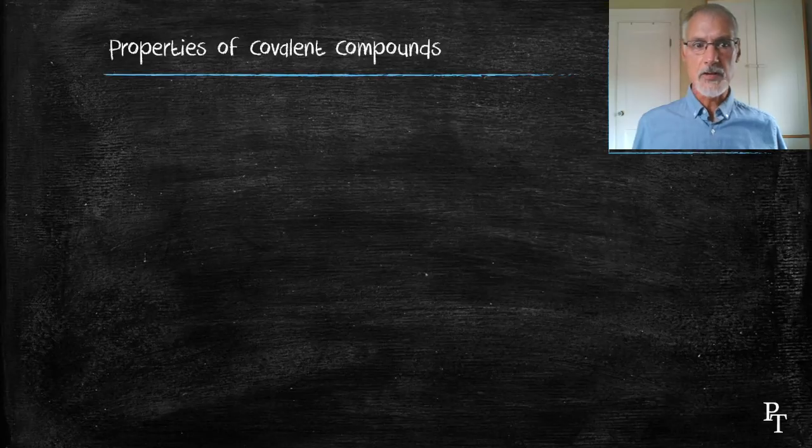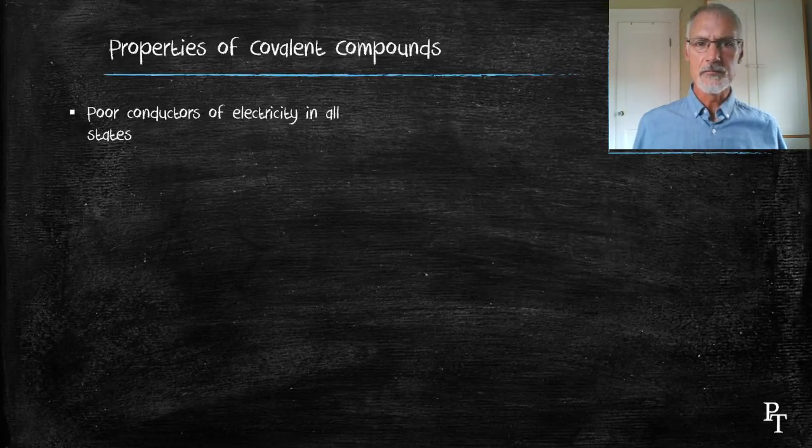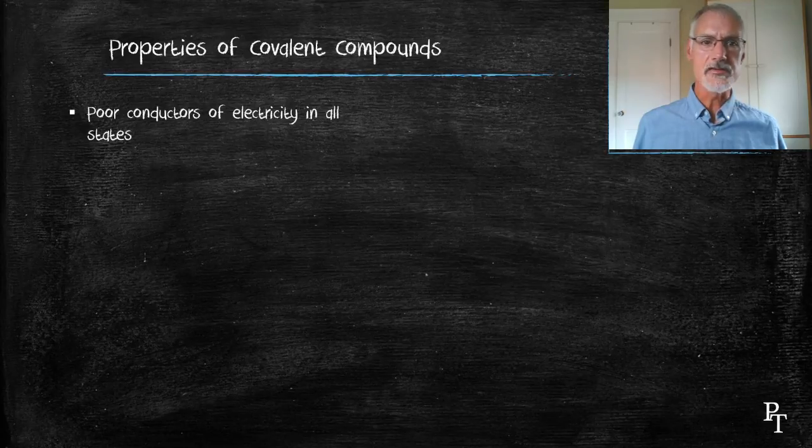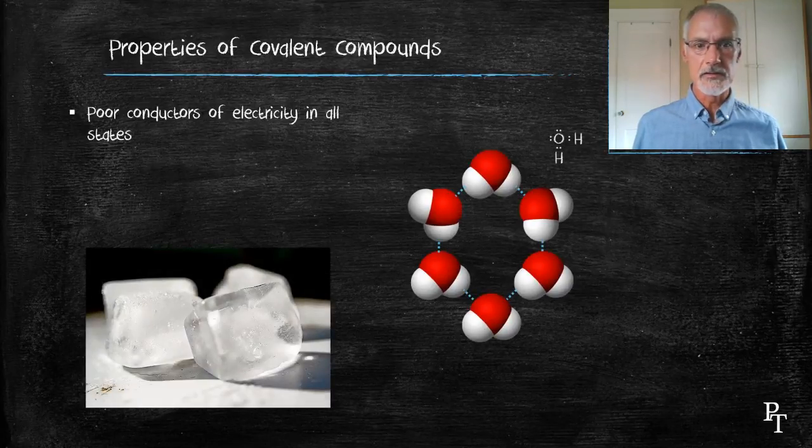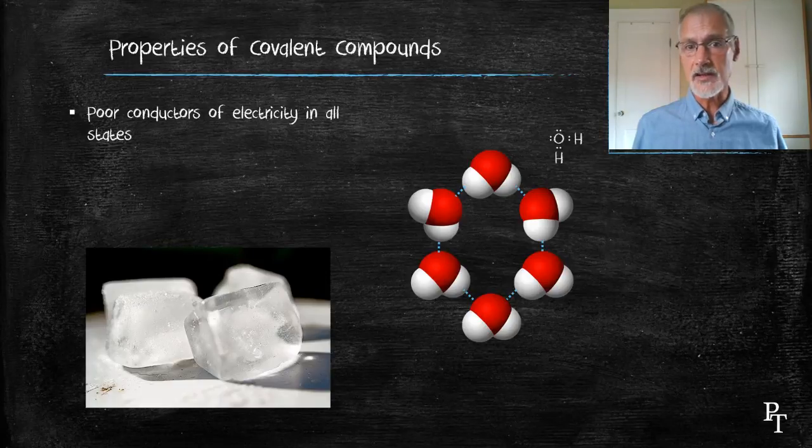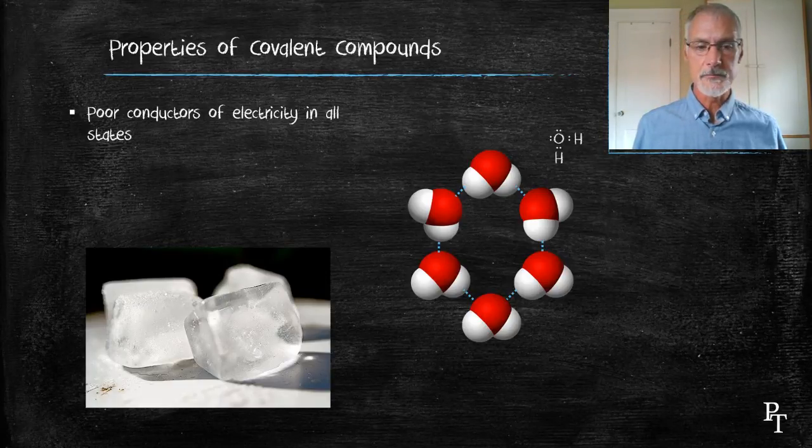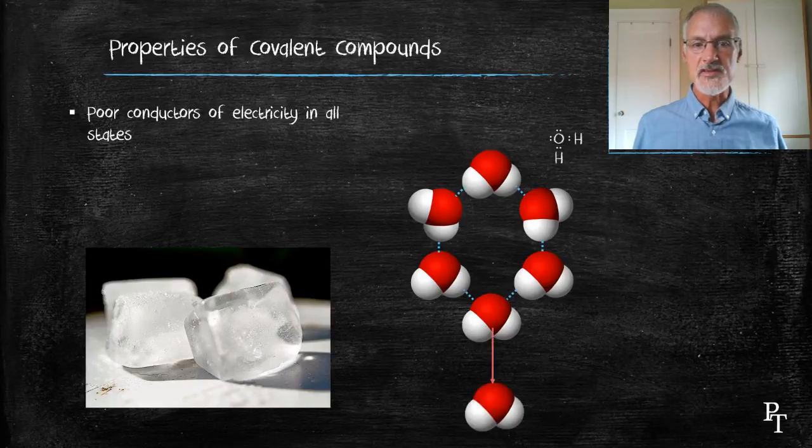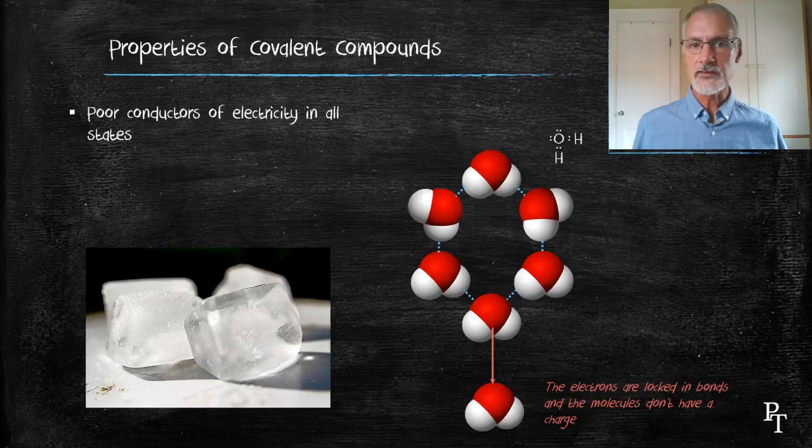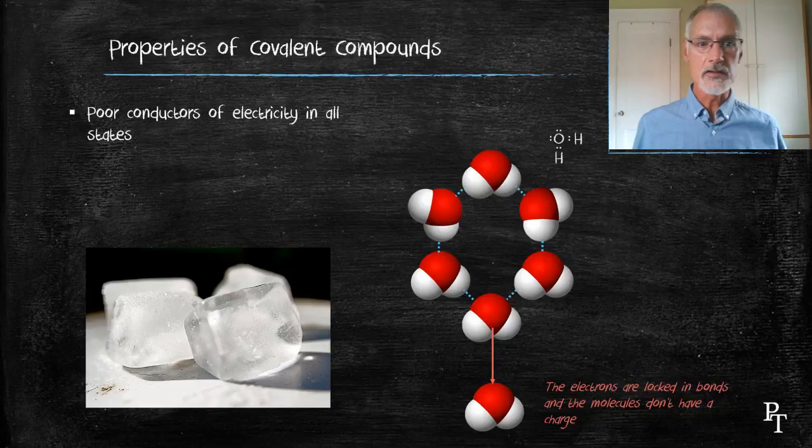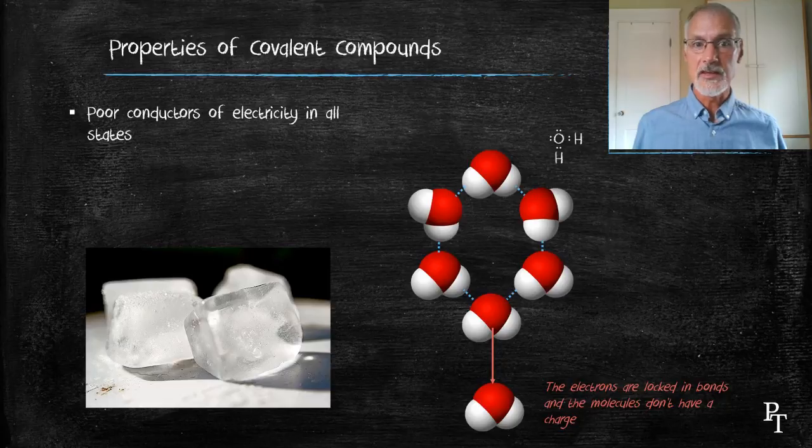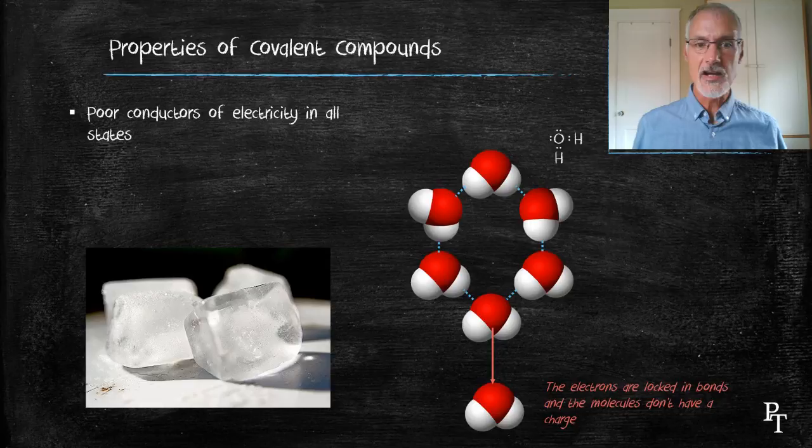Let's look at a comparison now of the properties of these covalent compounds. First of all, unlike ionic compounds, these are poor conductors in all states, solid, liquid, or gas. For my example, I'm going to consider an ice cube as my solid, formed with water molecules. And here you have the Lewis dot diagram for the water molecule. First thing, remember, in order for a substance to conduct electricity, it must have freely moving electrons or charges, or freely moving ions. In the case of the electrons, they're all tied up in the bonds between the hydrogen and the oxygen. And the water molecule itself is not an ion. So as a result, whether it's in a crystal form, or whether it's in a liquid form, that water molecule and its electrons aren't free to move around, and it's not a good conductor.